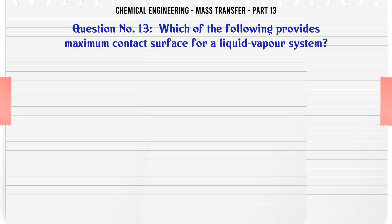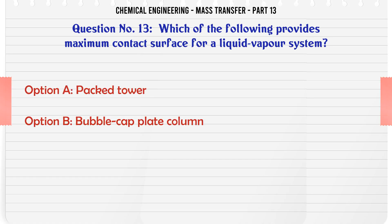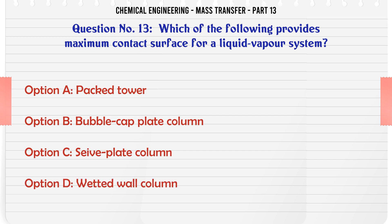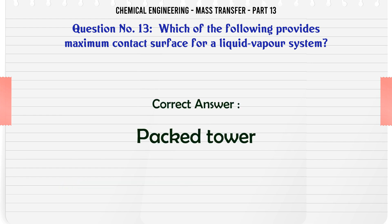Which of the following provides maximum contact surface for a liquid-vapor system? A. Packed tower. B. Bubble cap plate column. C. Sieve plate column. D. Wetted wall column. The correct answer is: Packed tower.